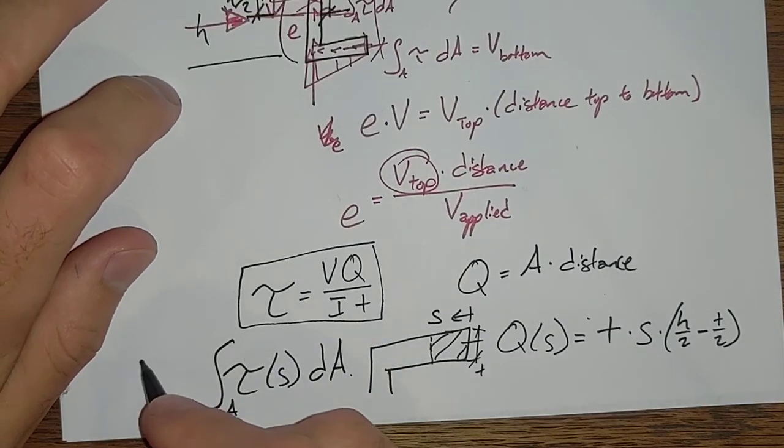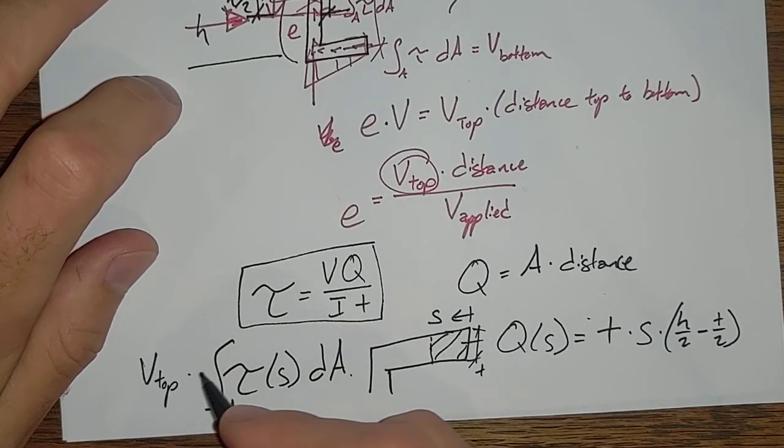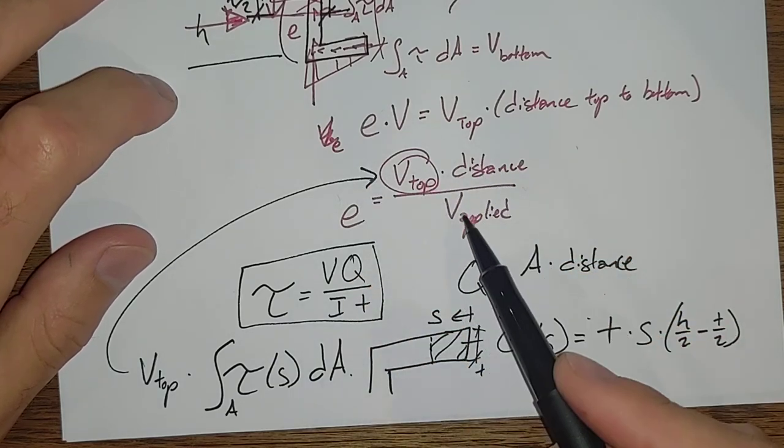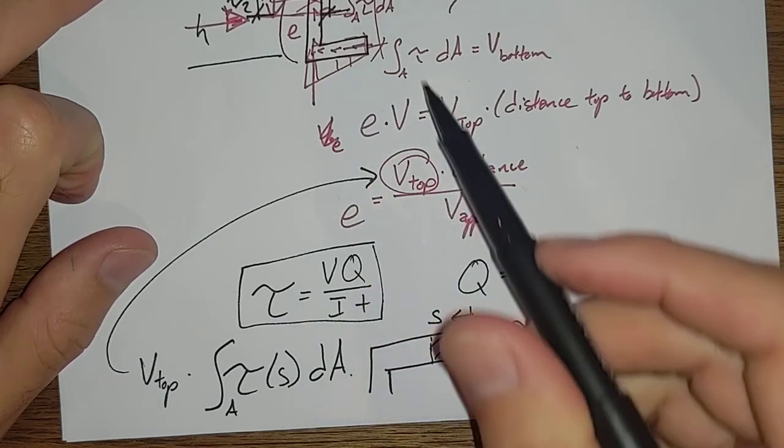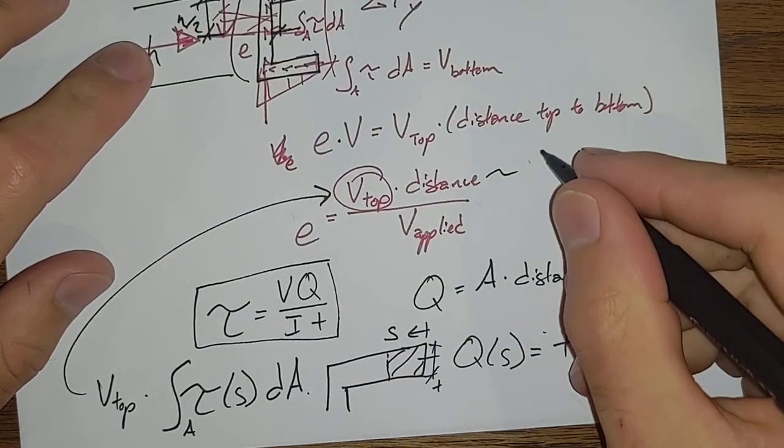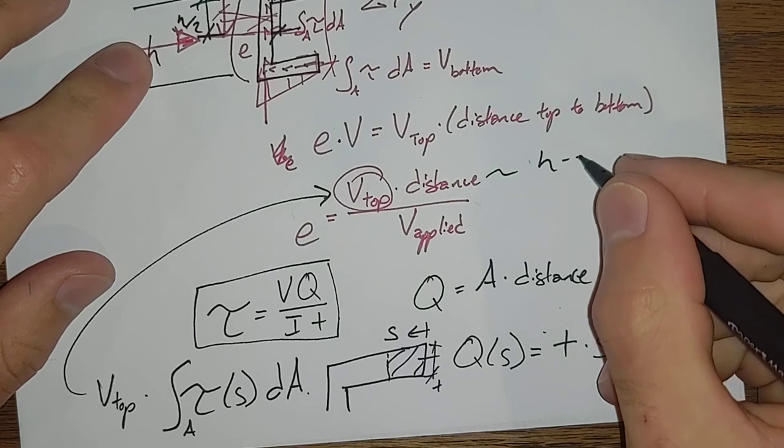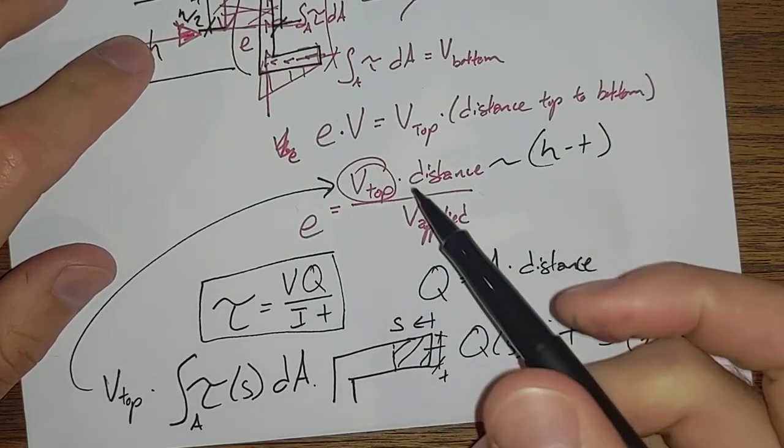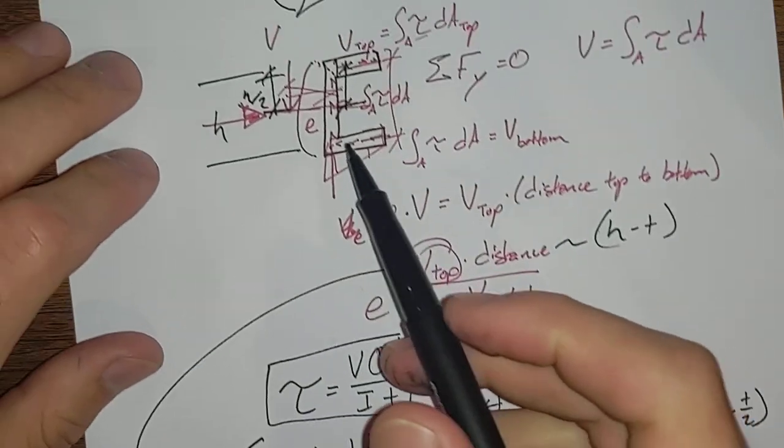Then we would substitute that in for this V top. We've got our distance separating the top and bottom flanges. That is going to be H minus T. And our V applied is just V. So knowing that we can go through and solve.